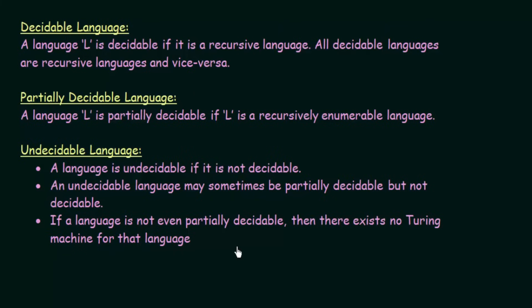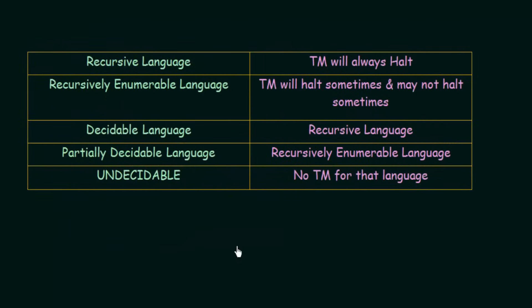I hope that clarifies the meaning of decidability and undecidability. Instead of getting confused by all these definitions, I have prepared a table for a quick recap. Recursive languages: the Turing machine will always halt. Recursively enumerable languages: the Turing machine will halt sometimes and may not halt sometimes. Decidable languages are recursive languages — Turing machine always halts. Partially decidable languages are recursively enumerable languages — Turing machine sometimes halts and sometimes does not. Undecidable languages have no Turing machine at all.